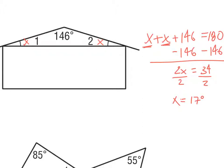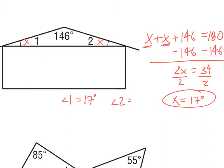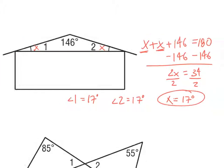Dividing both sides by 2 gives x equals 17 degrees. Since x is 17 degrees, angle 1 is equal to 17 degrees and angle 2 is also equal to 17 degrees. I'm just setting up equations and solving.